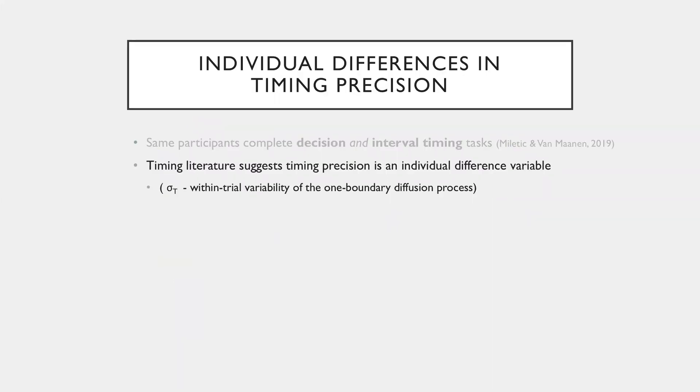But what we really wanted to look at were those parameter estimates. So the timing literature suggests timing precision is an individual difference variable. So this is a parameter that we have in the timing process of the TRDM.